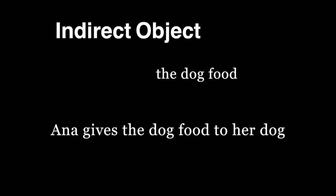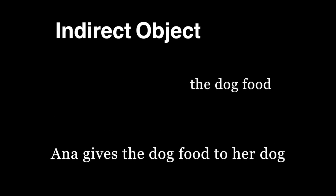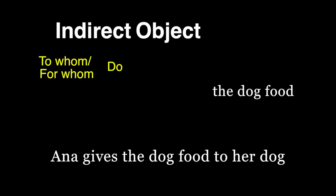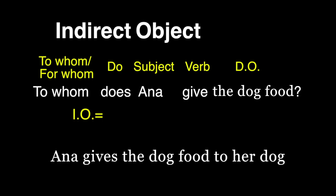Now that we have the direct object, we can form another question using to whom or for whom, the helping verb do, the subject, the main verb, and the direct object. To whom does Anna give the dog food? The answer to our question is the indirect object, her dog.